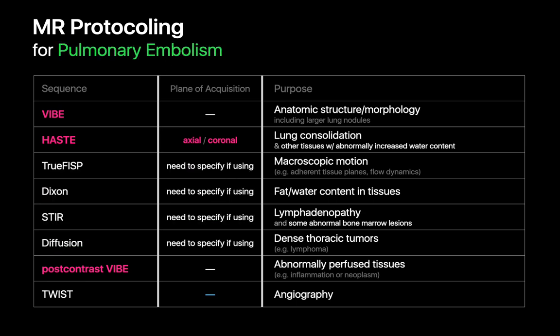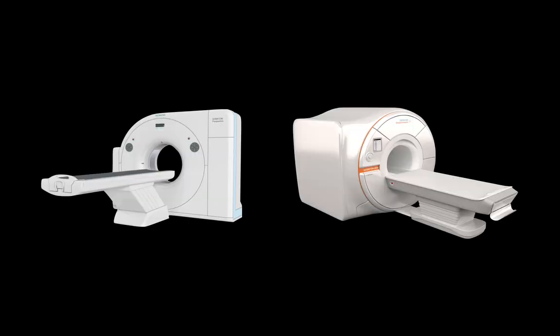If the indication of the chest MRI is PE, we'll take the workhorse sequences and add True FISP sequences in two oblique coronal planes parallel to the right and left pulmonary arteries, and a TWIST MRI sequence. The True FISP gives us a chance to pick up central PE if something goes wrong with the TWIST acquisition. With these examples, hopefully you can see how protocoling chest MRI is a more intricate process than protocoling chest CT, and that MR protocoling requires familiarity with the different MR sequences, what they're good at, and their limitations.